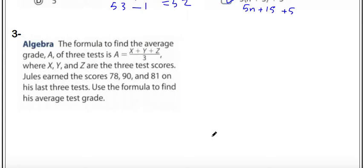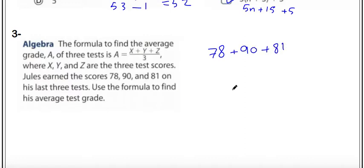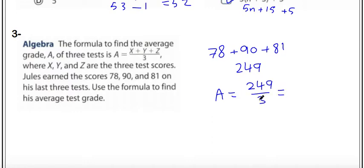Next: the formula to find the average grade A of three tests is A equals x plus y plus z divided by 3. Adding the values: 78 plus 90 plus 81 equals 249. So A equals 249 divided by 3. Since 24 divided by 3 gives us 8, the answer is 83.